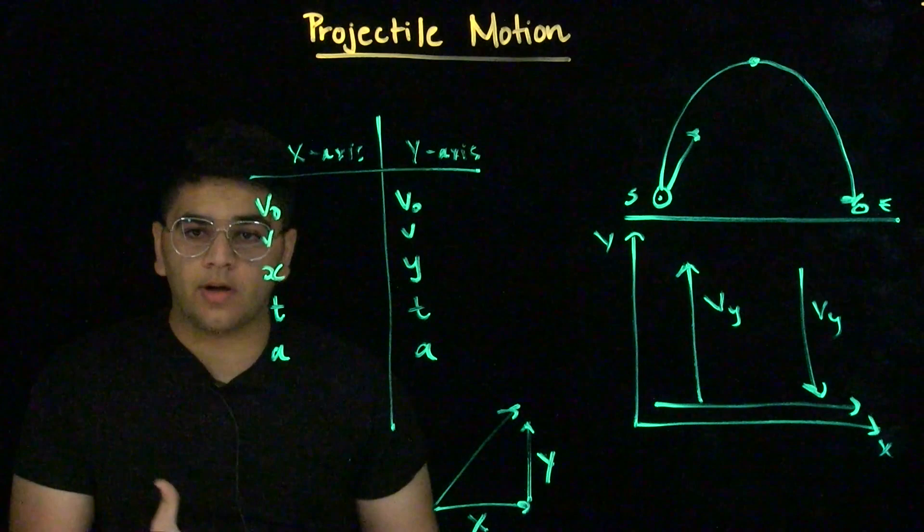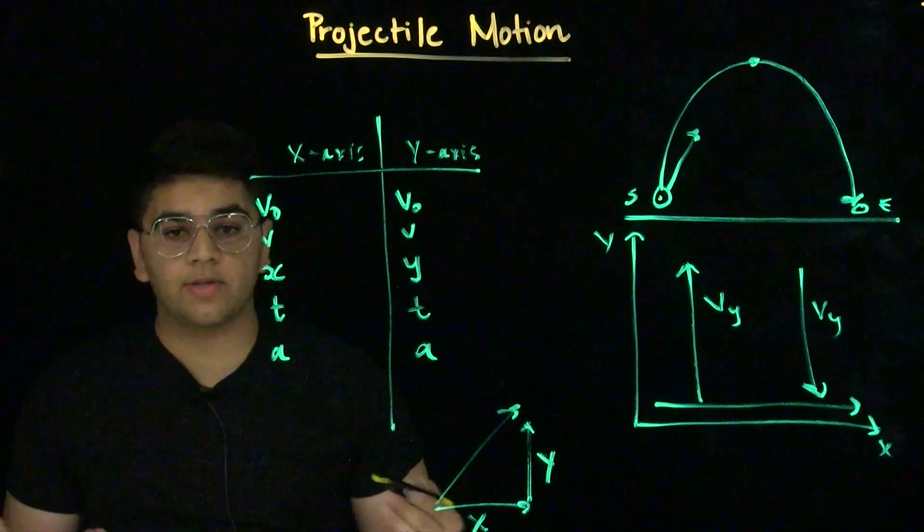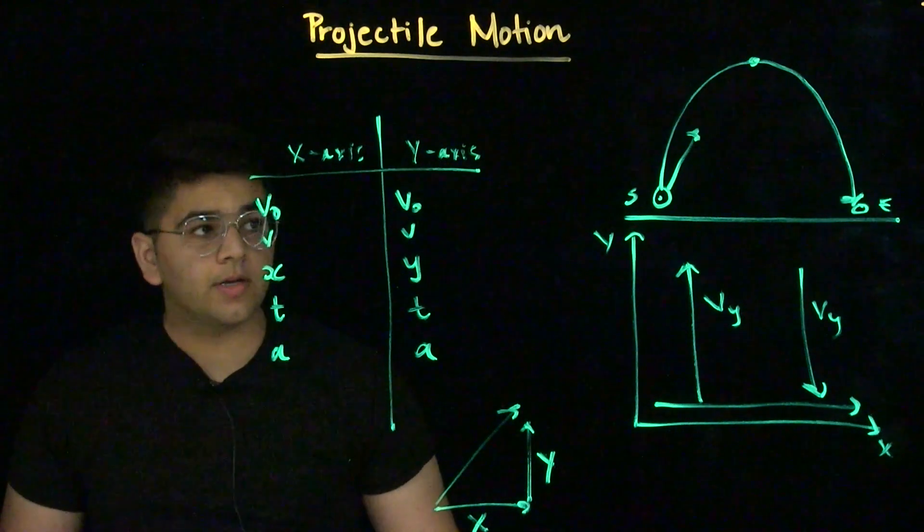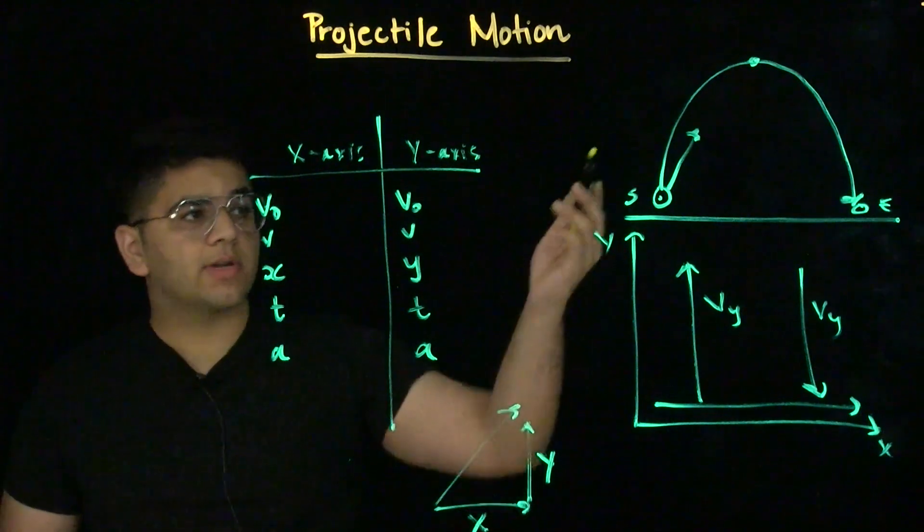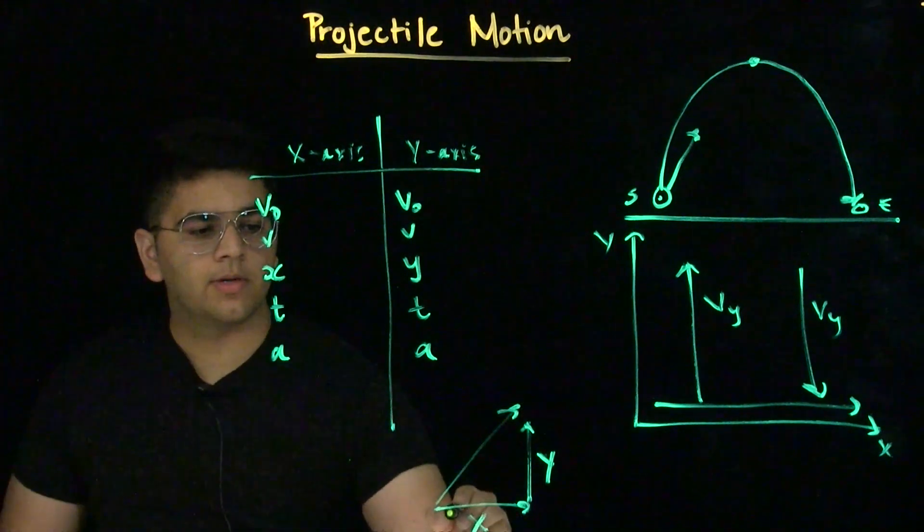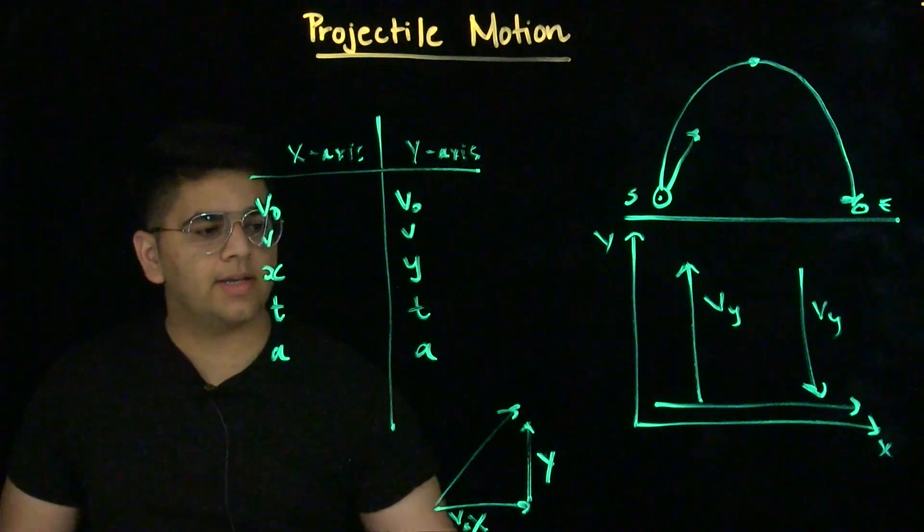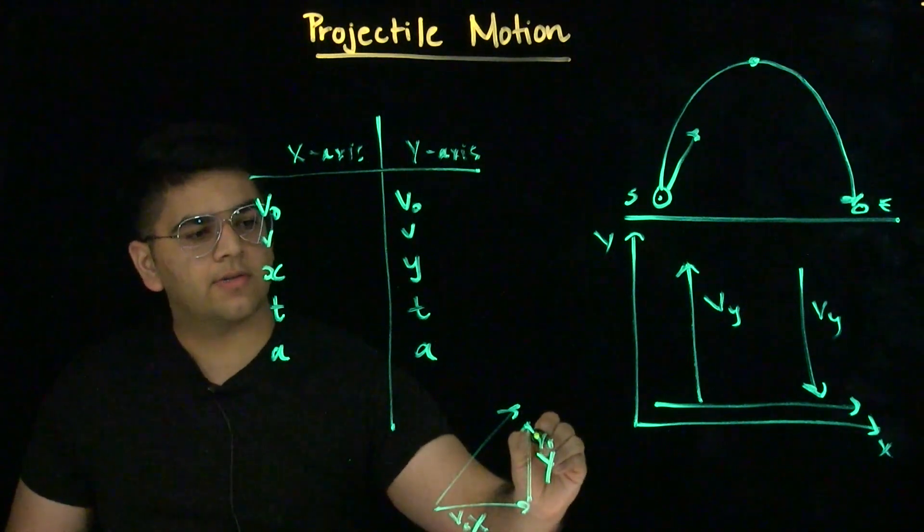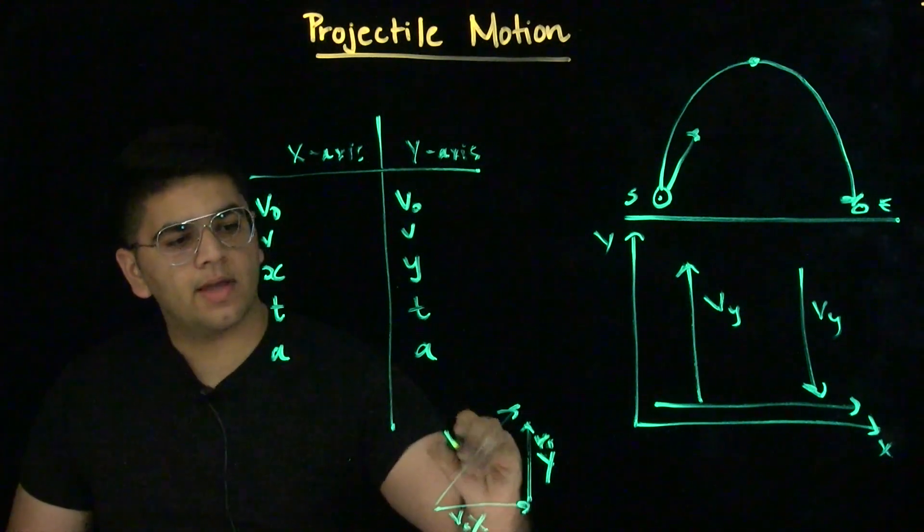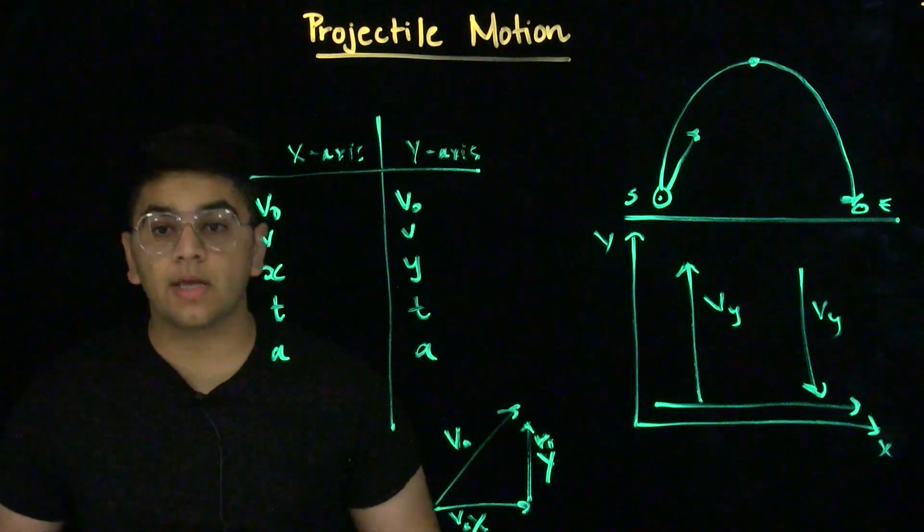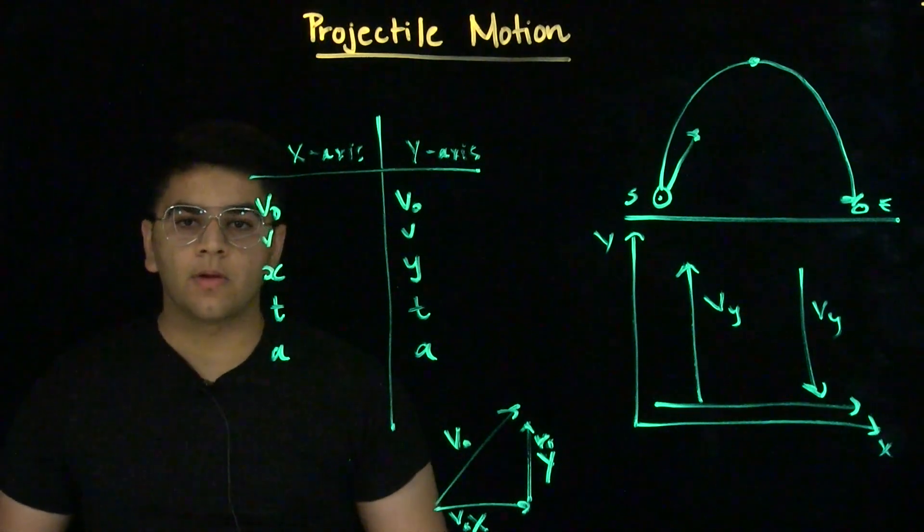You split up your velocity vector or displacement vector in this way. Here, we're looking at velocity. So, if we're considering the initial velocity of this projectile, this would be the initial velocity in the x, initial velocity in the y, and this is the actual initial velocity in two dimensions.